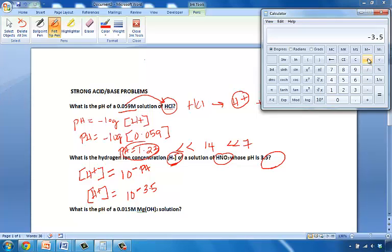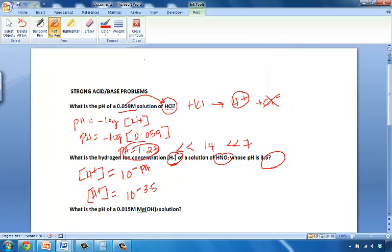Use the negative key to make that negative 3.5, and then we'll use the 10 to the X function instead of the log function. And there we go. We get 3.16 times 10 to the negative 4. So H+ concentration actually is then equal to 3.16 times 10 to the negative 4. So, pretty simple so far.